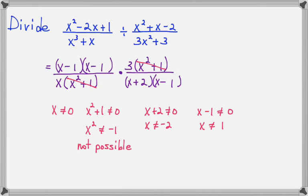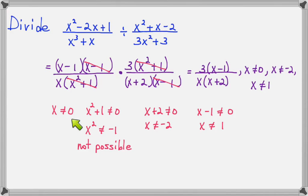Now we will cancel our x squared plus 1's, and we will cancel our x minus 1's. And what we're left with is the 3 times the x minus 1 in the top, and the x times the x plus 2 in the bottom. And we will list all the numbers that x cannot equal: 0, and negative 2, and positive 1.